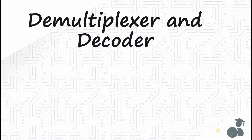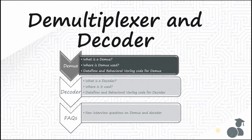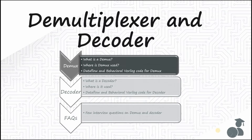Today's video and the upcoming videos will be about two more combinational circuits — the demultiplexer and the decoder — which are most often confused. Let's see what they are one after the other and then understand how they are different. In this video we will cover the demultiplexer, where it is used, and the Verilog code for demultiplexer using behavioral and data flow modeling.